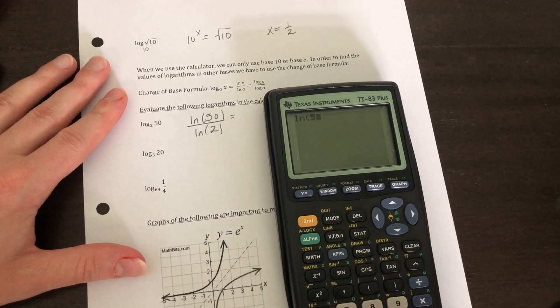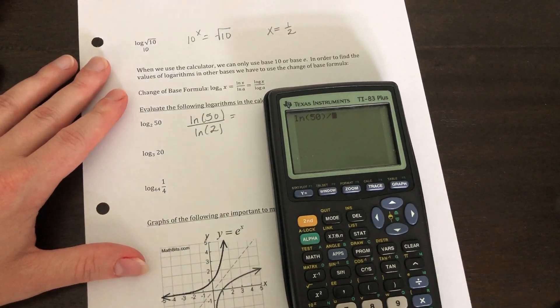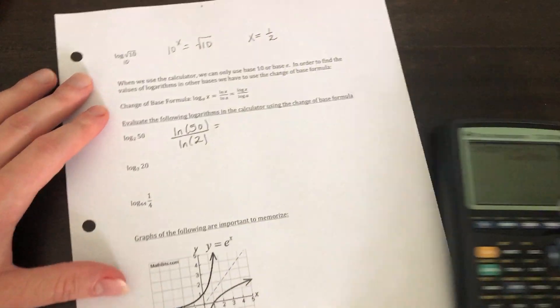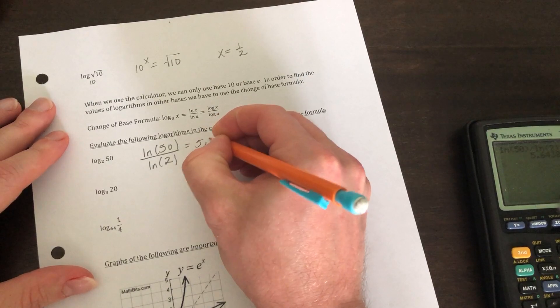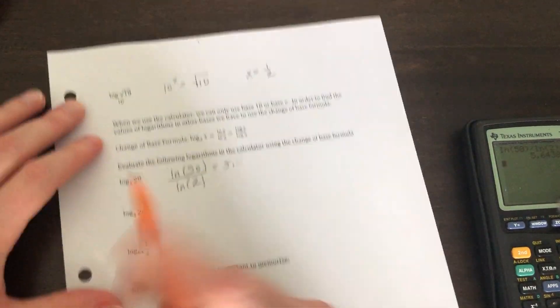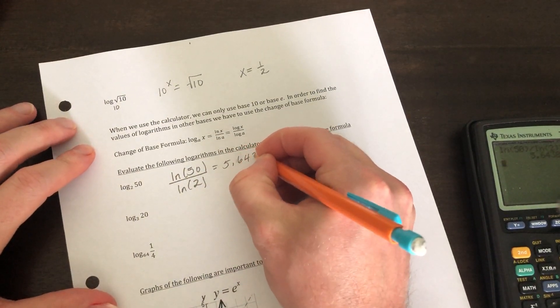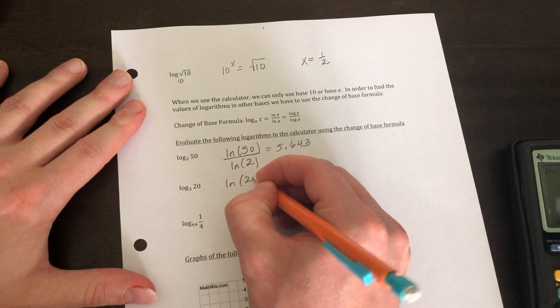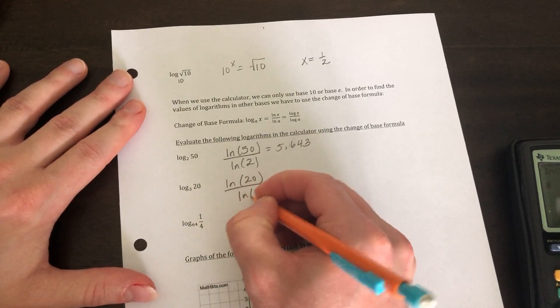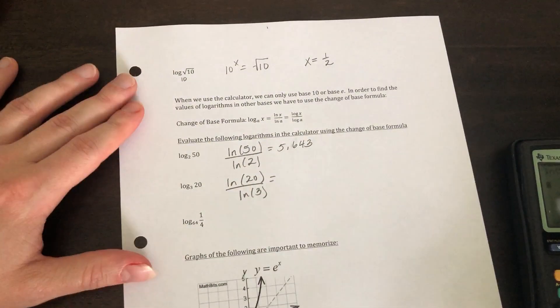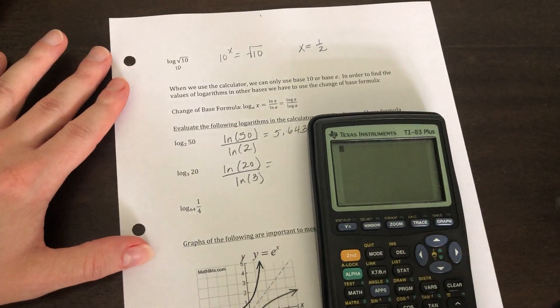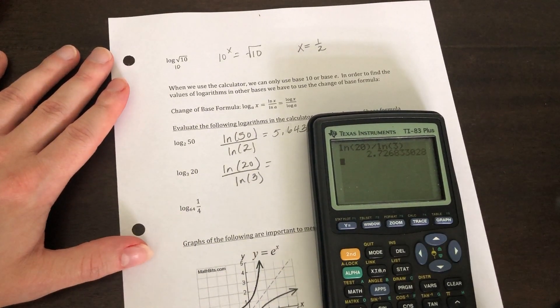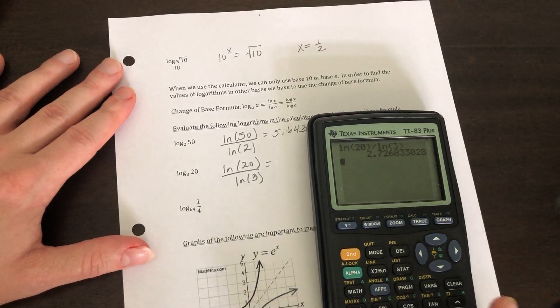You've got to make sure you use parentheses correct. Natural log of 50 divided by natural log close parentheses two. So you get 5.643. Next one, we're going to do natural log of 20 over natural log of 3. So natural log of 20 divided by natural log of 3. So we get 2.727.